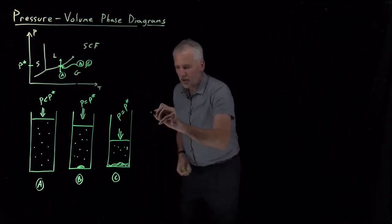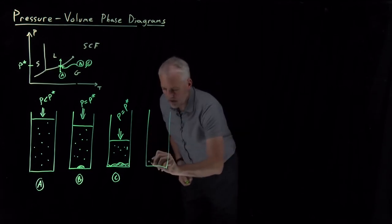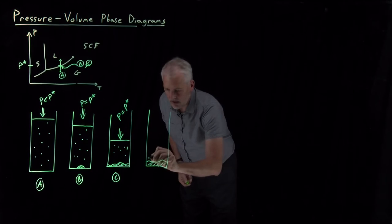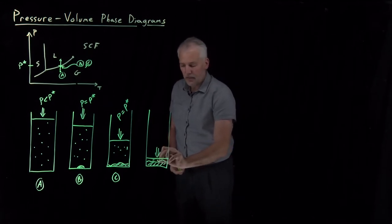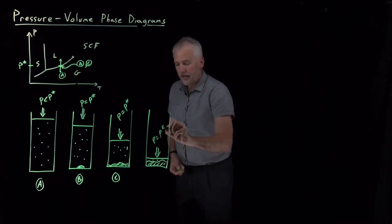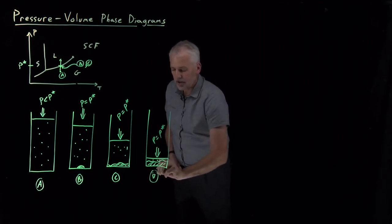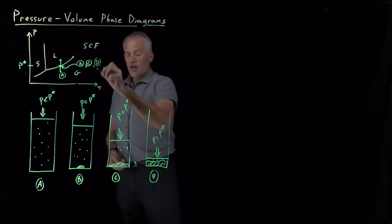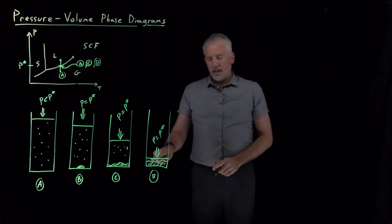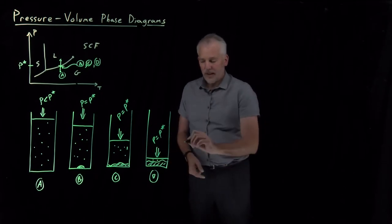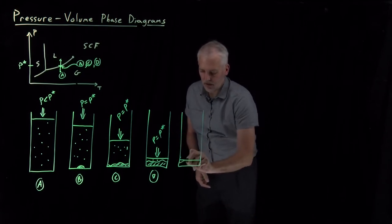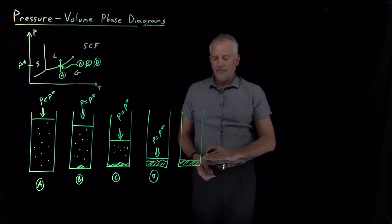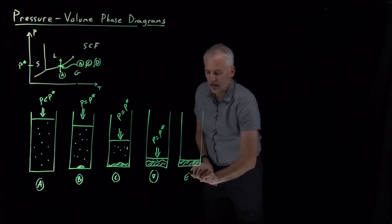This can continue all the way until I have quite a bit of liquid, with the piston just above the surface of the liquid and just a few molecules of gas remaining. Even this system must still be at the vapor pressure, because I have liquid coexisting with gas. It's only once I make the system a little bit smaller — condensing those last few molecules of gas into the liquid phase — that the system will be fully liquid. At that point, everything beneath the surface of that piston is liquid. I'll call that label E.